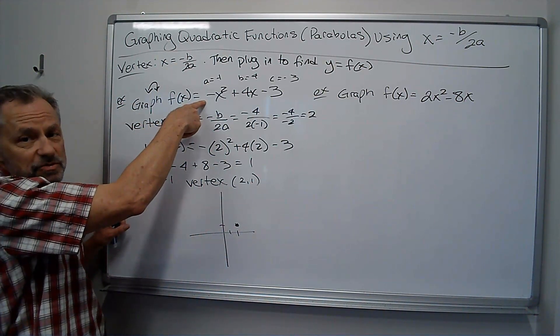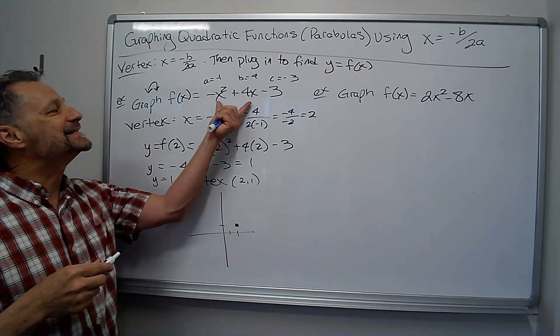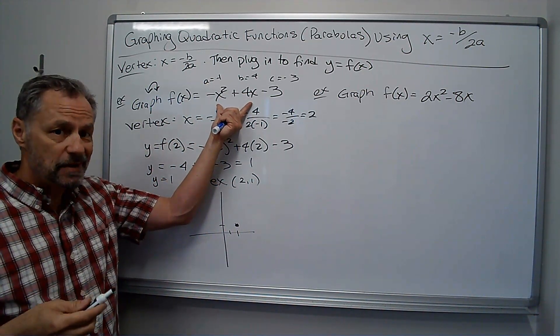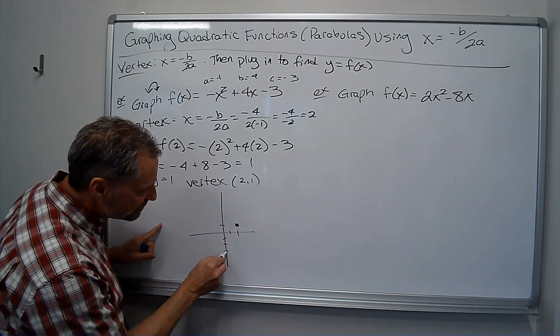Remember, it's an upside down problem because it was negative x squared. One way to do it is say if I plug in 0 for x, my y-intercept, I'm going to get negative 3 for y. So it actually crosses down here at negative 3.